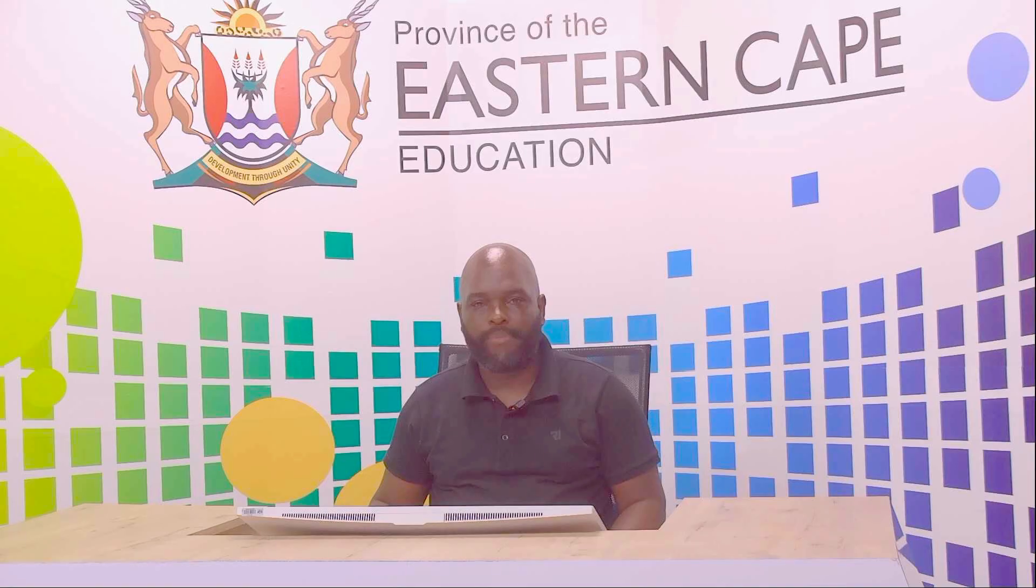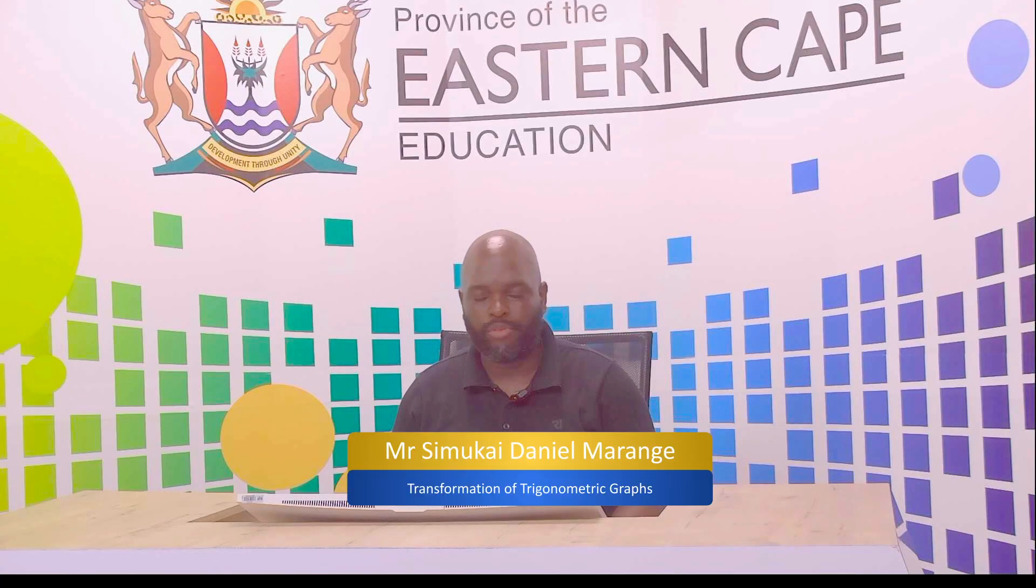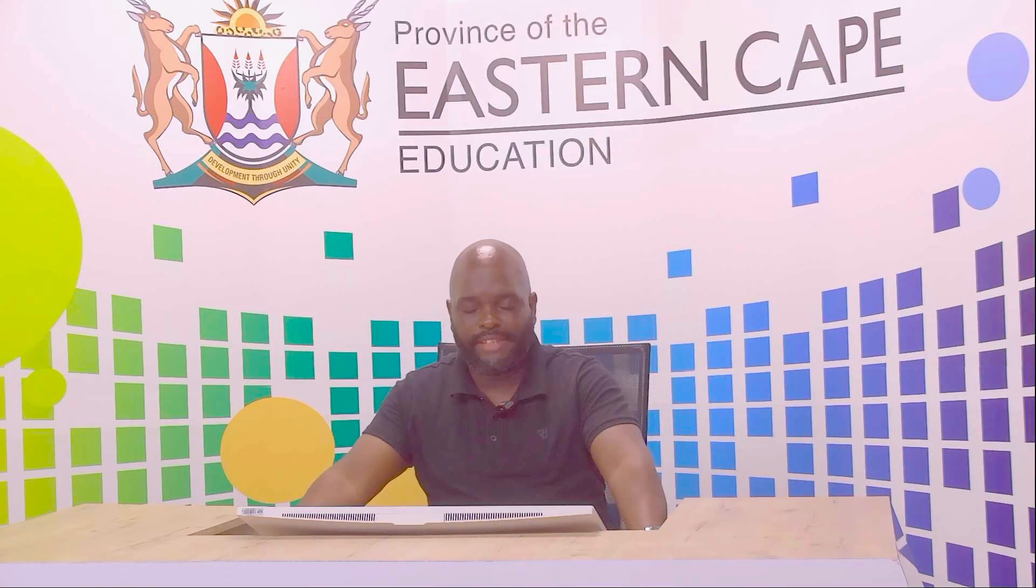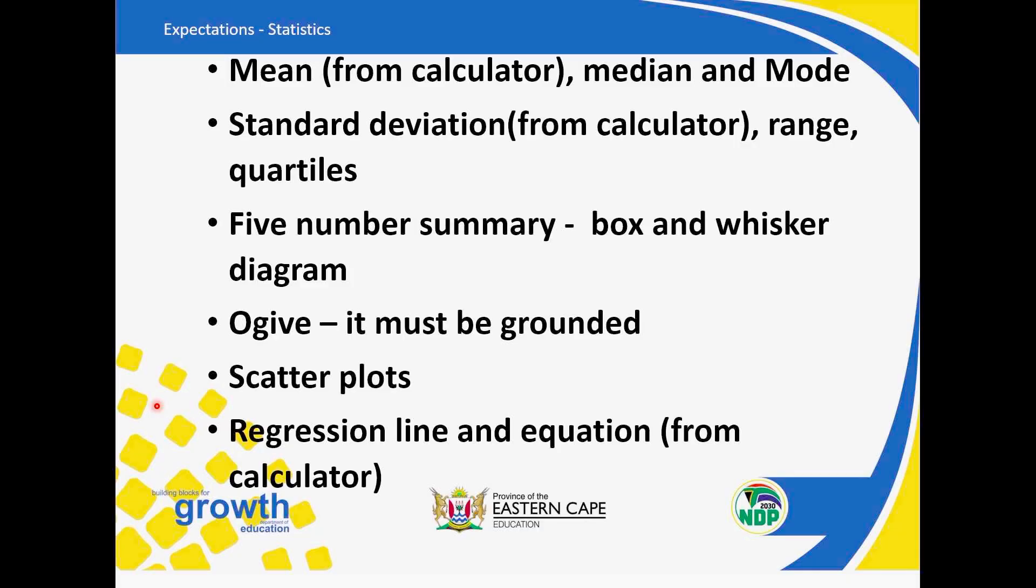Then, your statistics, you are expected to have plus or minus 20 marks. It can be 18, normally plus or minus 3. It can be from 17 up to 23. So, in all, the average marks should be 20 marks. Now, when you are answering that, the first thing that you need to know is to know your mean. And you must know how to get it from the calculator using your calculator.